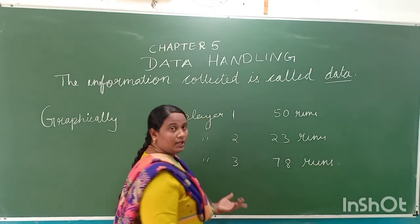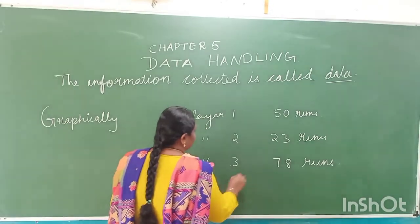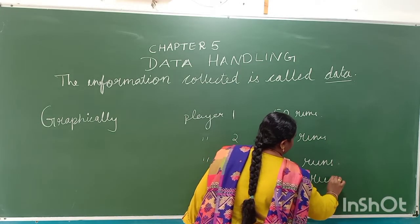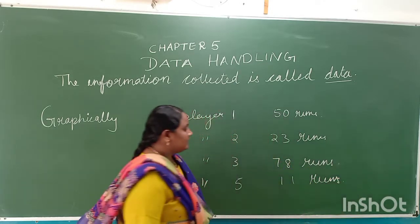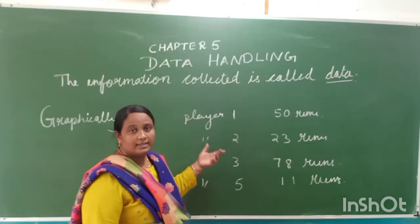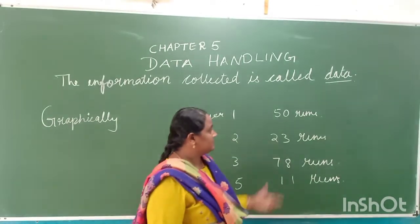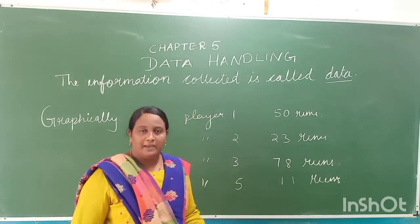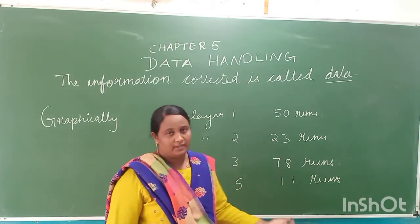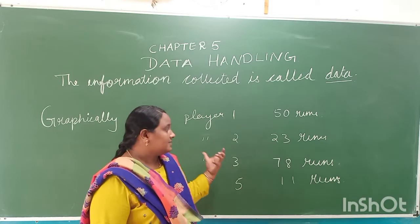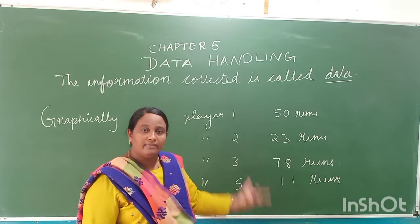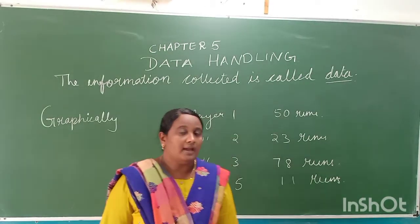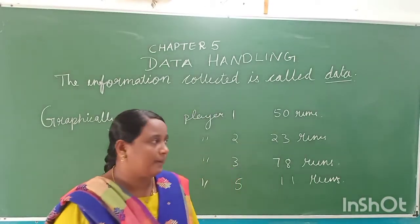For example, data can be related to cricket. One player got 78 runs, then another player got 11 runs. These are all numerical data. We are seeing it in the form of player 1, player 2 — this one got 50 runs, 23 runs — such information. These are all examples of data.